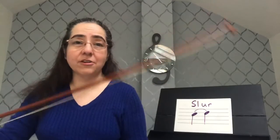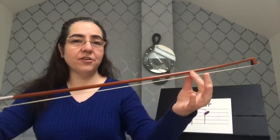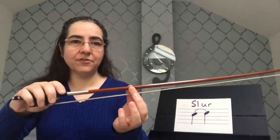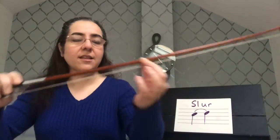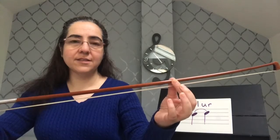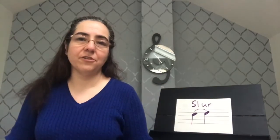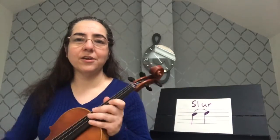So, in order to avoid that, you want to use equal amounts of bow on each note. If I had three notes slurred, you would divide the bow in thirds: the first third for the first note, the second third for the second note, and the last third for the third note. You want to plan your bow amount in advance.